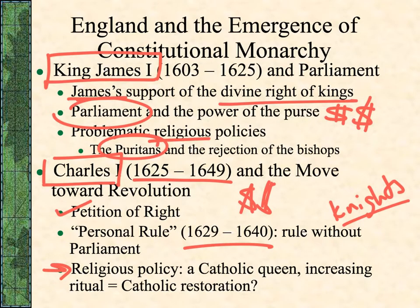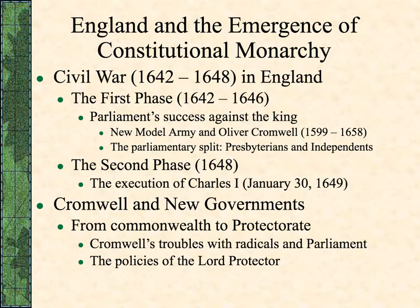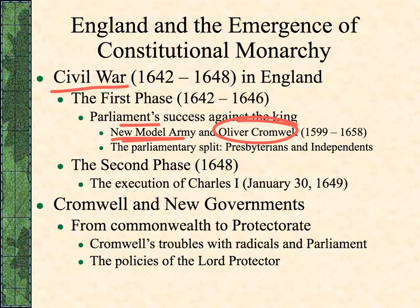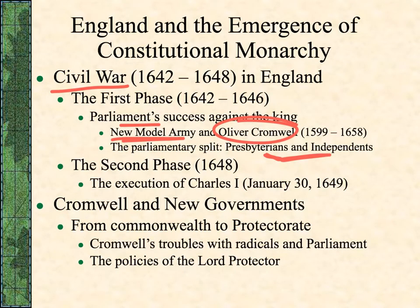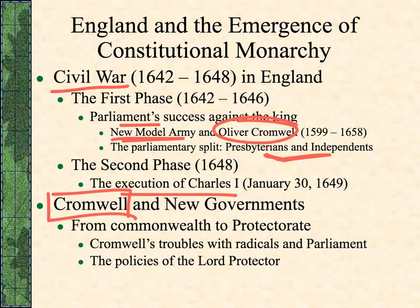The Puritans, who didn't want a Catholic reformation, end up fighting in a civil war. In the first phase, Parliament has real success over the king, largely due to Oliver Cromwell and his New Model Army, which was designed and fought differently and was very successful. There's a split in Parliament between Presbyterians from Scottish influence and independents — the Puritans — with everybody all over the place. They then decide to cut off the head of the king.